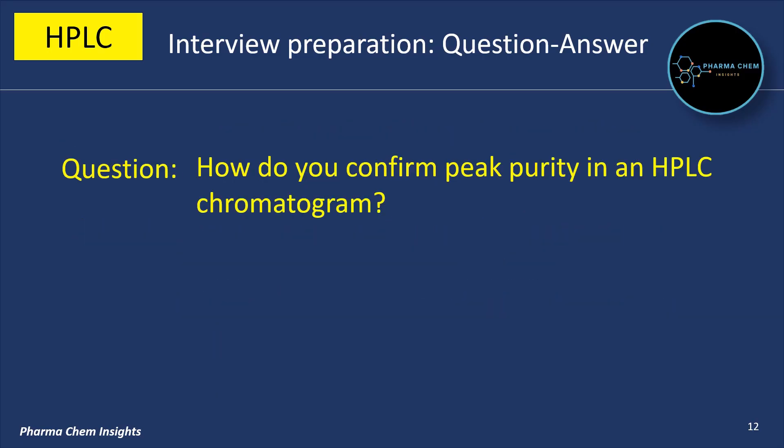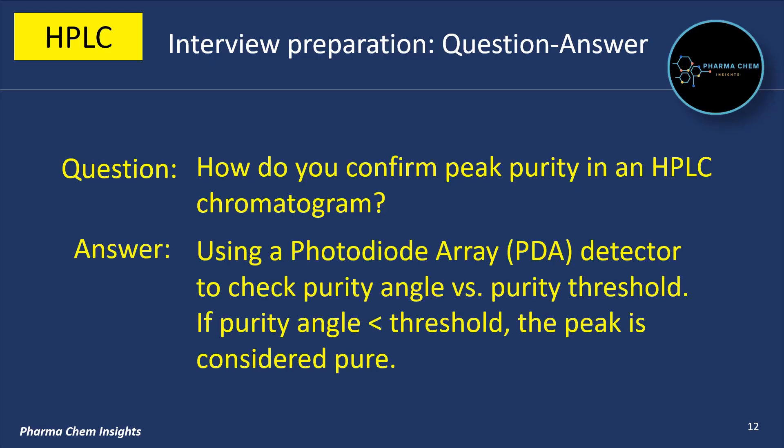Next question: how do you confirm peak purity in an HPLC chromatogram? Using a photodiode array (PDA) detector to check purity angle versus purity threshold. If the purity angle is less than the purity threshold, the peak is considered pure.